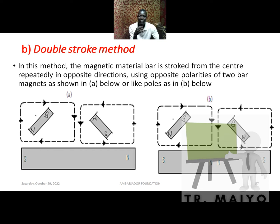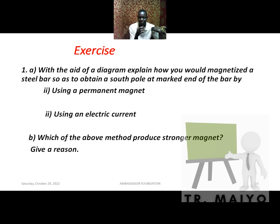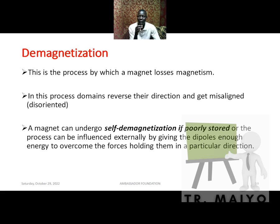Exercise: with the aid of a diagram, explain how you would magnetize a steel bar to obtain a south pole at one end — first using a permanent magnet and second using an electric current. State which of the two methods produces a stronger magnet and give a reason.